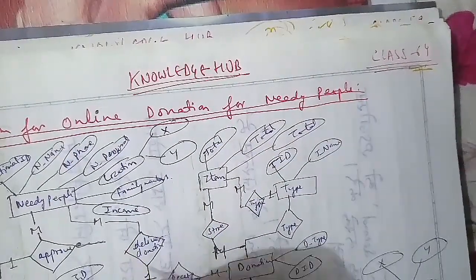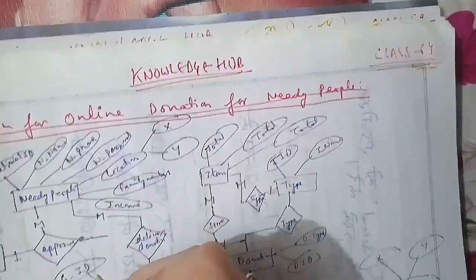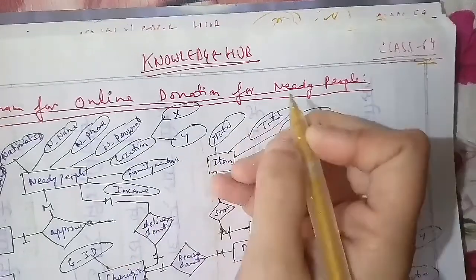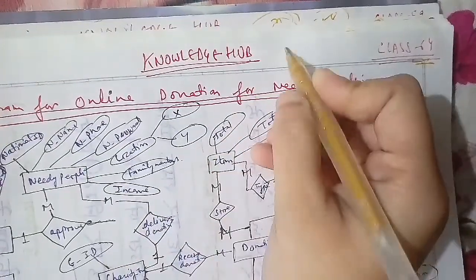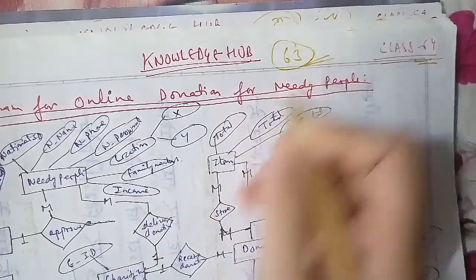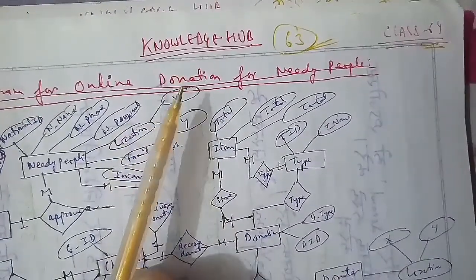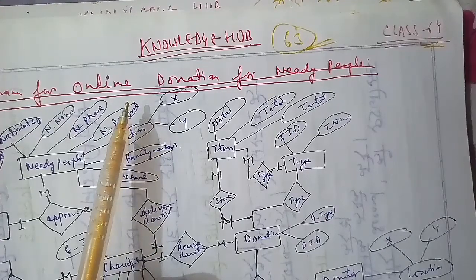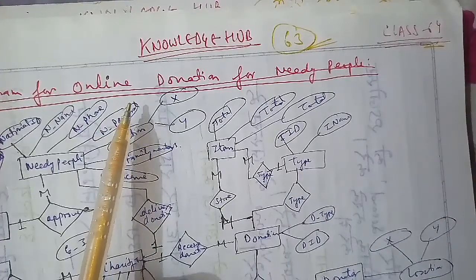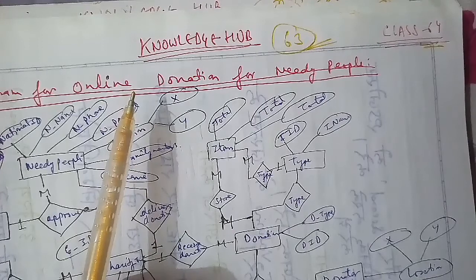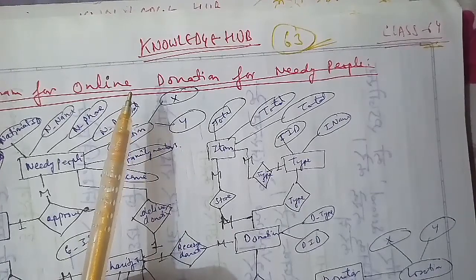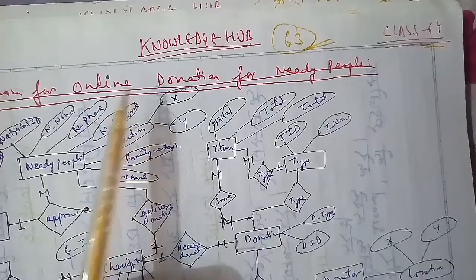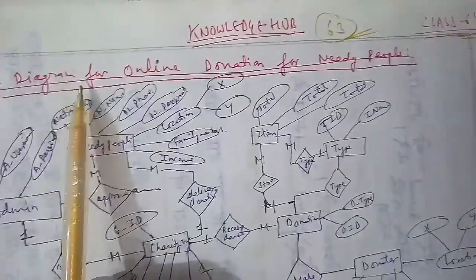We had completed 63 classes in the last classes, and that has been an important one. In those 63 classes we had done ER diagrams for online shopping and many more, which we had discussed. You can go ahead and find all of that as well.